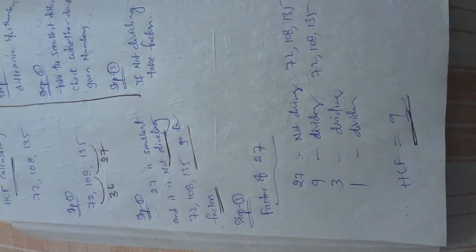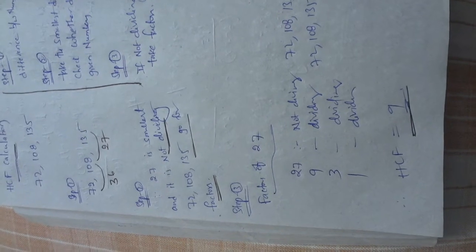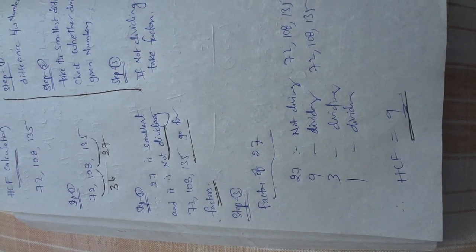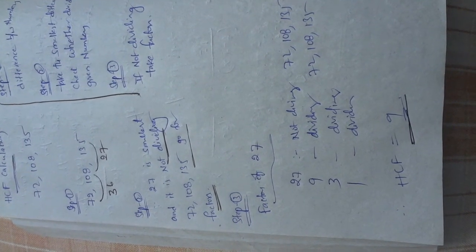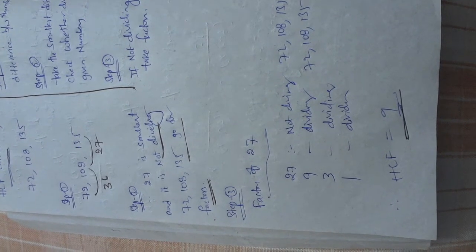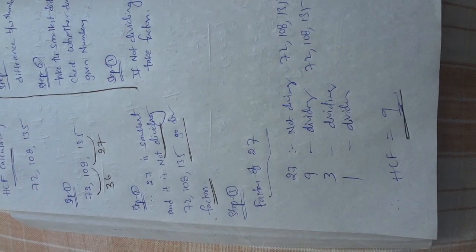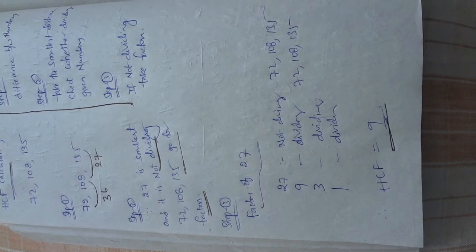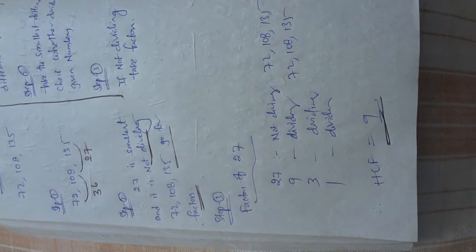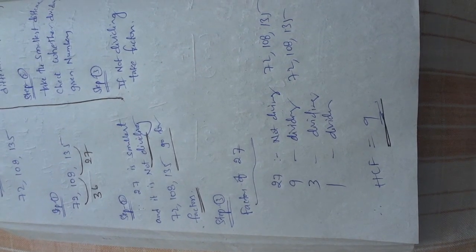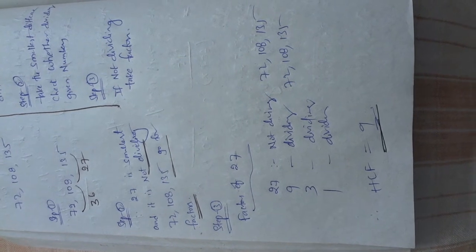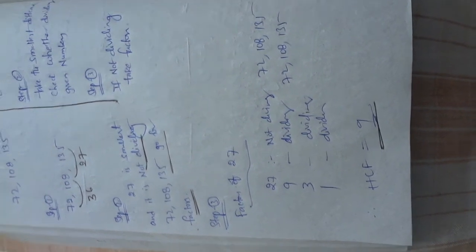In step 2, I am taking the smallest difference, that is 27, since 27 is the smallest. It is not dividing 72, 108, and 135, so I am going to factors. Step 3: I am going to start. Factors of 27 are 27, 9, 3, and 1. Since it is HCF, 9 is dividing all three numbers.